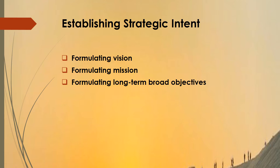Vision means what an organization should be in the future. Mission is the purpose that sets it apart from other organizations — the specific mission of an organization — and it also identifies the scope of its operations. The objectives form the end results of the organization, defining what the end results should be.